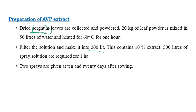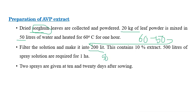After the first step, if we obtain around 50 liters of sorghum leaf extract, the remaining 150 liters of water is added to make the total solution up to 200 liters. This final solution constitutes a 10 percent extract.